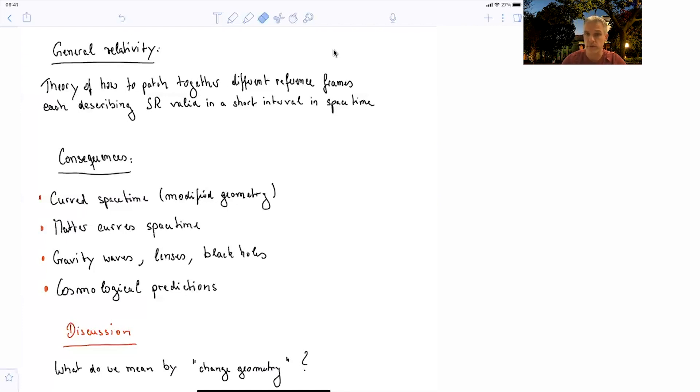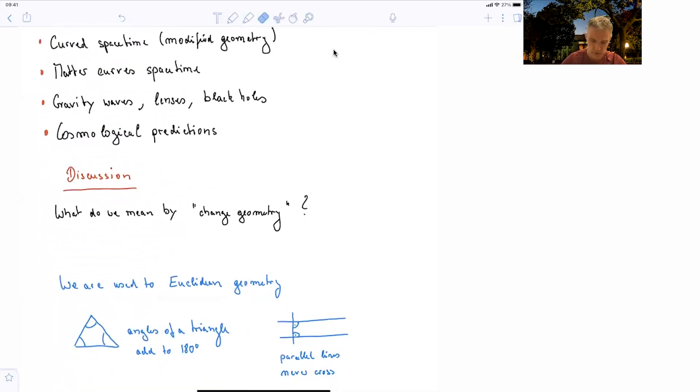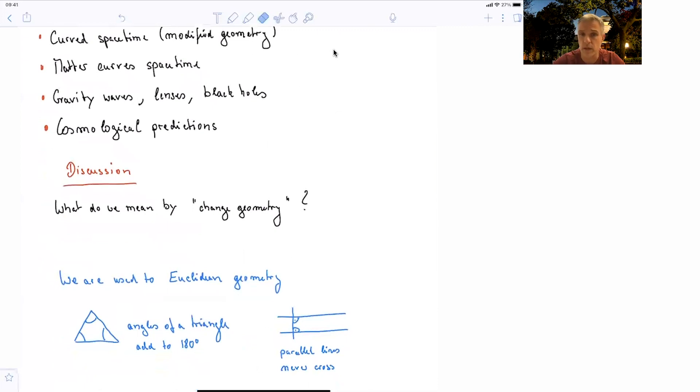So let's have a discussion first. What does it mean to have a changed or modified geometry? You're all used to Euclidean geometry, where when you draw a triangle, you add up all the angles to 180 degrees. If you draw two parallel lines, they never cross and they also don't diverge.